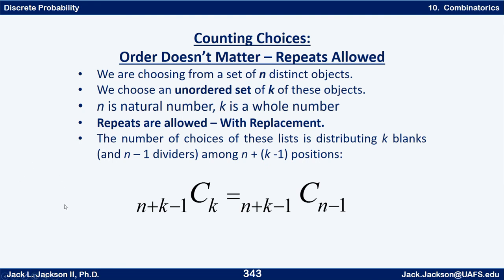So here's the general rule. We're counting choices where the order doesn't matter and repeats are allowed. The difference from the last case is that repeats were not allowed before. We're choosing an unordered set of K objects from a set of N indistinct objects, where N is a natural number, K is a whole number, and K can be larger than N. The number of choices is the binomial coefficient N plus K minus 1 choose K, which is the same as N plus K minus 1 choose N minus 1.